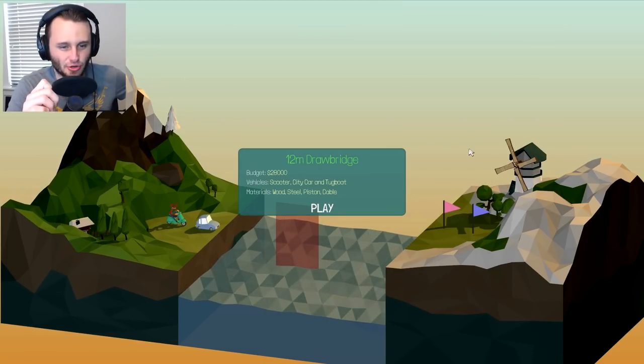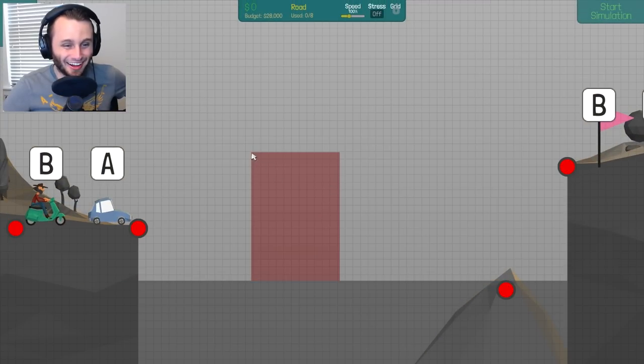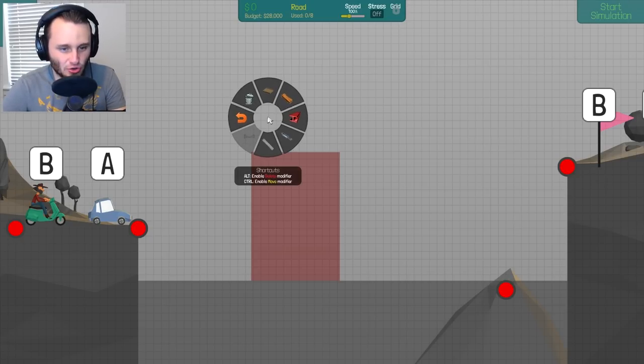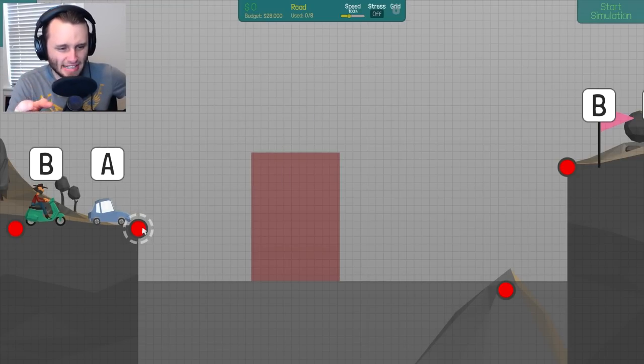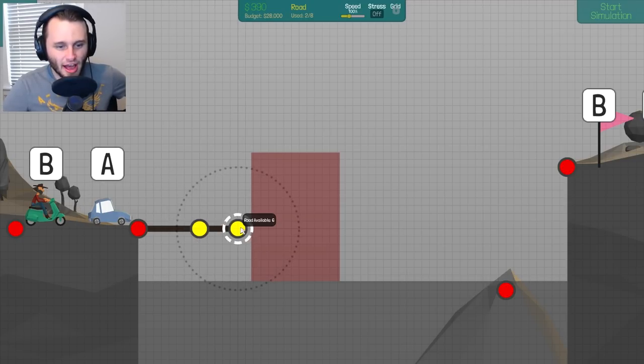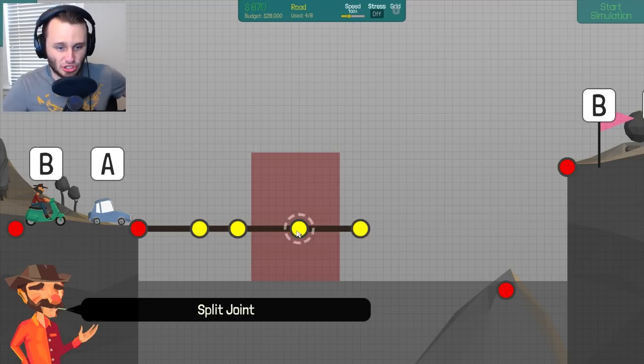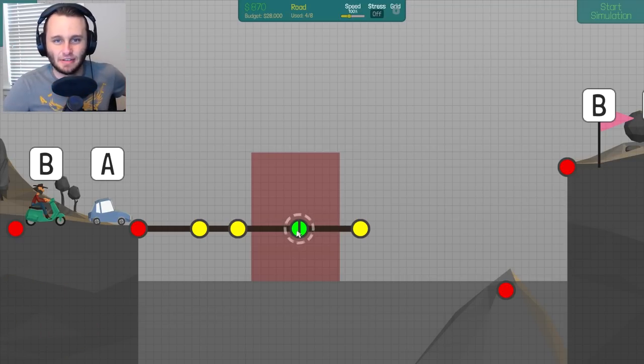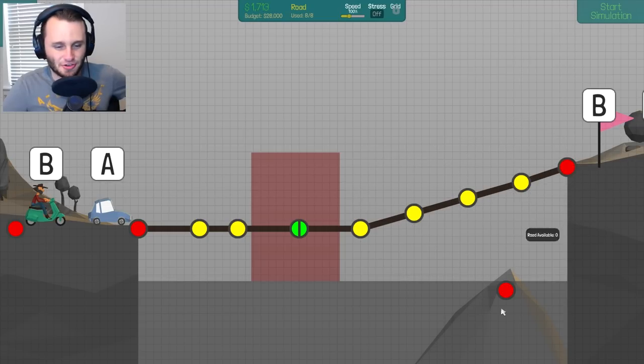Alright, so this level is a 12 meter drawbridge. It's similar to the last one, but it looks like it's a lot - look at this. This must be a massive yacht coming through here. Okay, so it says I can use hydraulics. Oh, look at this. I can actually use steel and cable. Okay, so I think what we have to do is similar to the last one, we're gonna have to create a road. We're gonna have to put a point right here. And we gotta put a point directly in the center. There we go. Because remember, that point right there, we're gonna put a split joint there. That's what's gonna split in half for the massive yacht to go through.